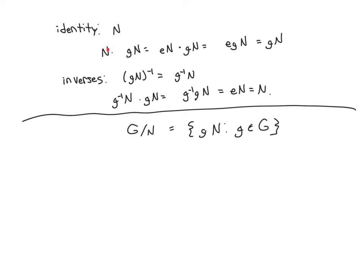N times GN. Well, the reason why this is the identity coset is because this is the coset where you can choose E as the coset representative. It's the only coset that has E as an element in it. By definition of our multiplication, EN times GN is EGN. Since E is the identity in G, E times G is GN. And so we see we have the property we want.